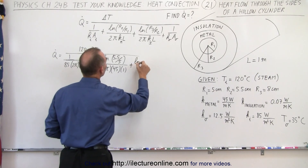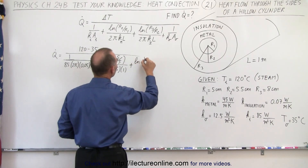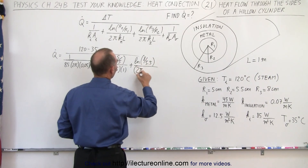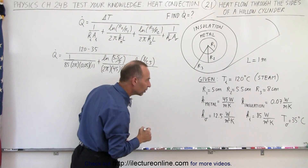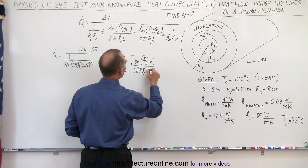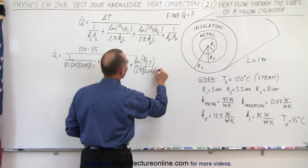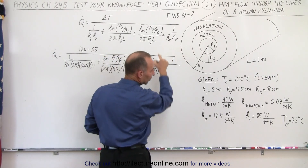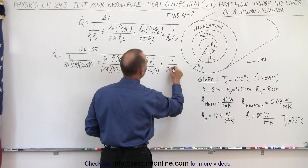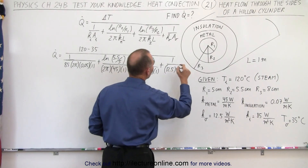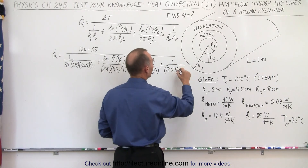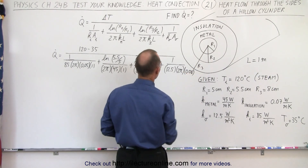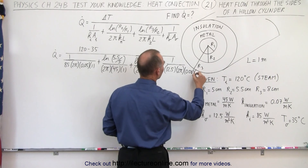Plus the natural log of R3 to R2, which is 8 over 5.5, divided by 2π times the conductivity constant for the insulation, 0.07, times the length 1. And finally we have one more term: plus 1 over H on the outside, which is 12.5, times the area on the outside, which is 2π times the radius 0.08 times the length 1.